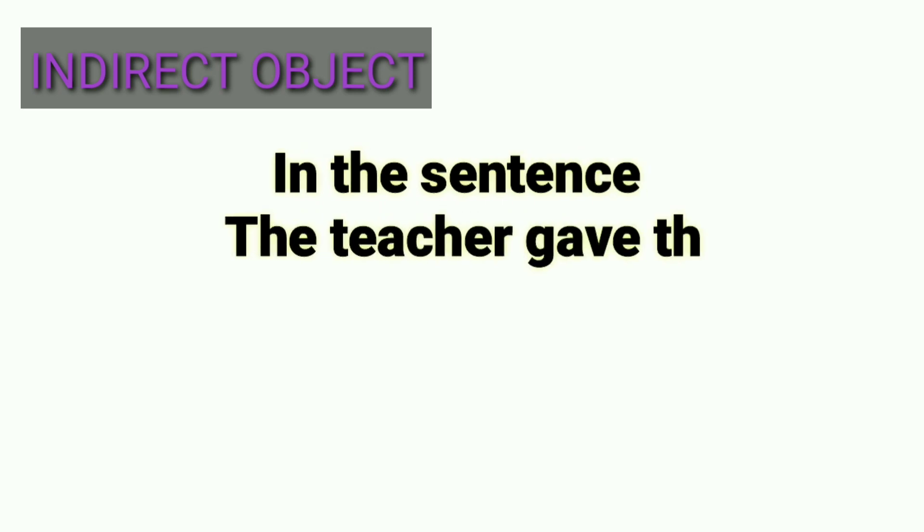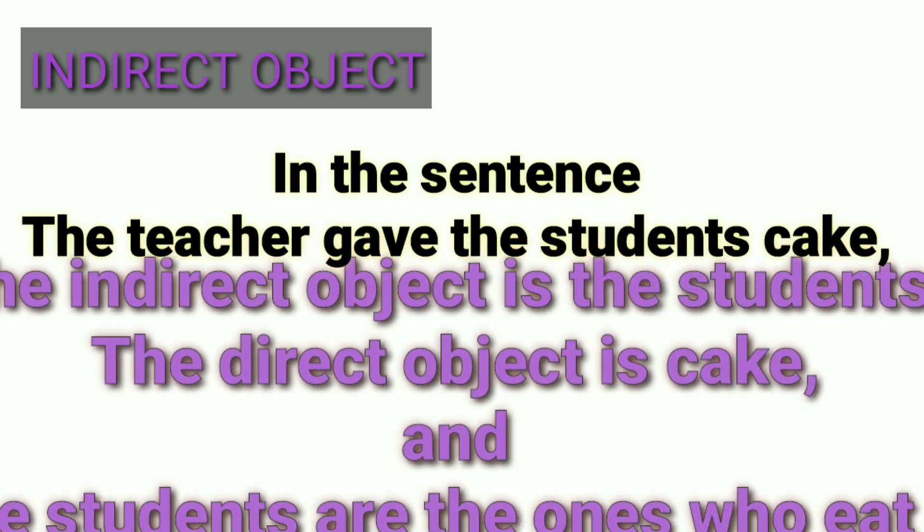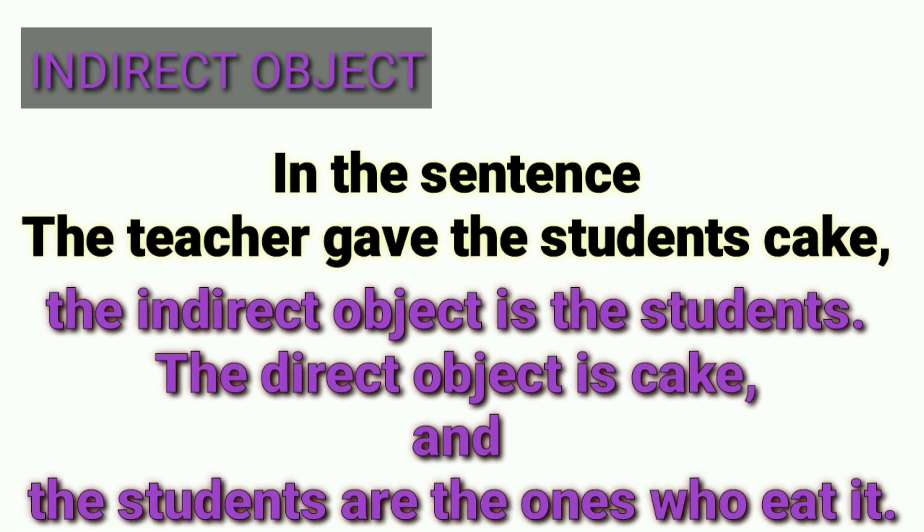In the sentence the teacher gave the students cake, the indirect object is the students, the direct object is cake, and the students are the ones who eat it. If you really like this video, share it.